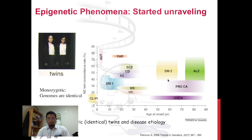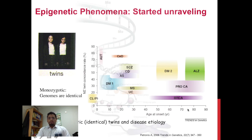Each shape in the figure represents a complex disorder such as autism, celiac disease, schizophrenia, Crohn's disease, asthma, diabetes mellitus type 1 and 2, Alzheimer's disease, breast cancer, ulcerative disease, multiple sclerosis, and others. The left and right margins of each shape represent the range of age of onset, and the upper and lower margins represent the range of concordance rates. Cleft lip and palate occurs during embryogenesis and is therefore placed to the left of the graph. It is clear that even monozygotes are discordant for age of onset, and notably also discordant for cleft lip and palate despite sharing the same uterine environment.